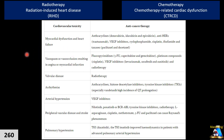The cardiovascular complications of cancer therapy can be divided into two categories: those related to radiation and those due to chemotherapy. We are going to talk about both categories in a practical way. Here are all the important cardiovascular complications and the agents and factors that cause them. Now, let's go one by one and start talking about each of them.